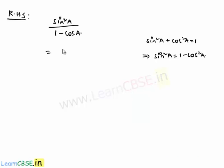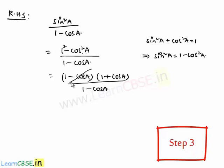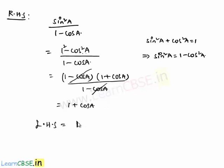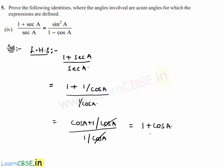For the right hand side, sin squared a divided by 1 minus cos a: using the identity sin squared a equals 1 minus cos squared a, we replace it to get 1 minus cos squared a divided by 1 minus cos a. This is in the form a squared minus b squared, which factors as 1 minus cos a into 1 plus cos a, divided by 1 minus cos a. The 1 minus cos a cancels and we are left with 1 plus cos a. The simplified form of LHS equals the simplified form of RHS, so the equality is correct.